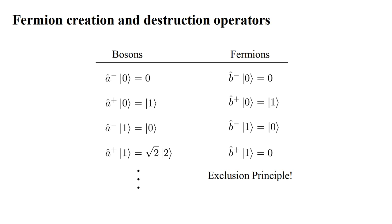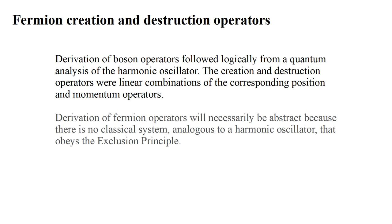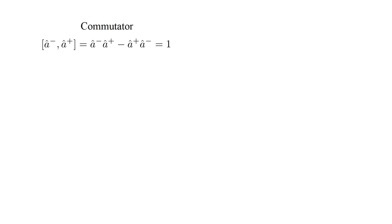Derivation of boson operators followed logically from a quantum analysis of a classical system — the harmonic oscillator. The creation and destruction operators were linear combinations of the corresponding position and momentum operators, which represent physical observables. However, derivation of fermion operators will necessarily be abstract, because there is no classical system analogous to a harmonic oscillator that obeys the exclusion principle. So let's see what we can come up with using logic and math.